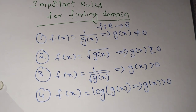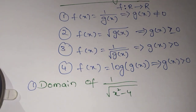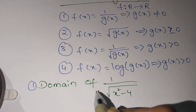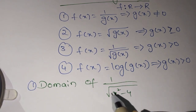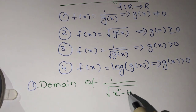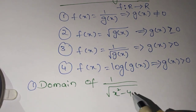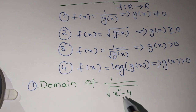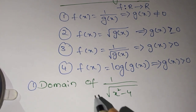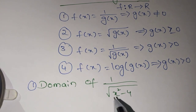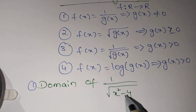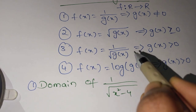The first question: find the domain of 1 by square root of x squared minus 4. First, check this function with the root rule.